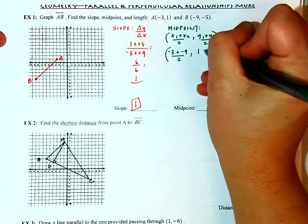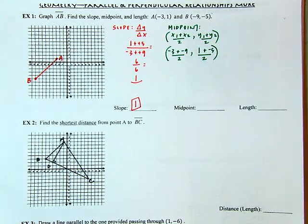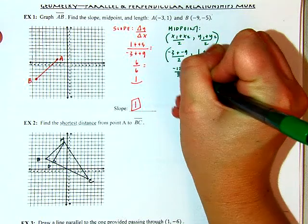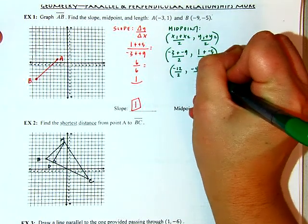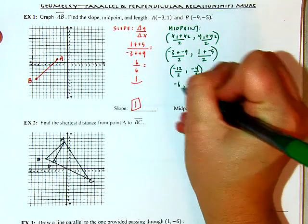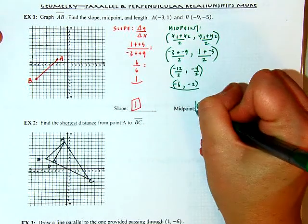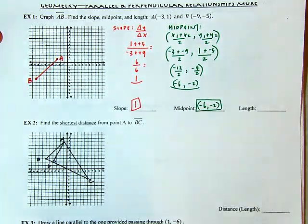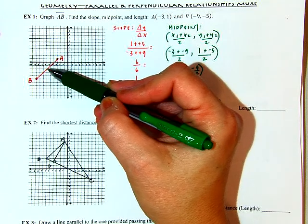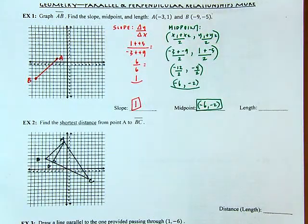And 1 plus negative 5, divided by 2. That gives me negative 12 over 2 and negative 4 over 2, so the midpoint is negative 6, negative 2. Checking that point on the graph — yes, that makes perfect sense. Right there is my midpoint, dividing the segment into two congruent parts.